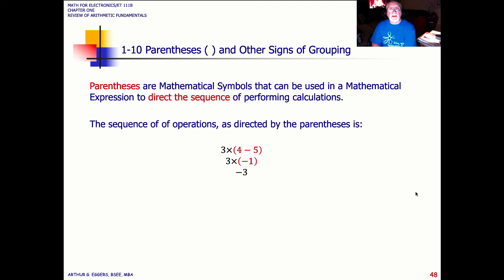And looking at parentheses, again, parentheses denote multiplication. Parentheses are kind of used as a direction or an order. Parentheses are mathematical symbols that can be used as a mathematical expression to direct the order or the sequence of performing calculations. So in this case, three times, in parentheses, four minus five. Four minus five is done first, although we've got a multiplication here. We could multiply three times four and three times five, and we'd get, what, 12 minus 15, and come up with the same answer. But in this case, we can do what's inside of the parentheses first, simplify it to minus one, multiply it times three, and we get a minus three.